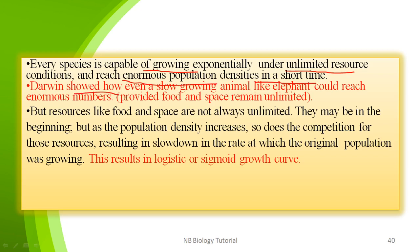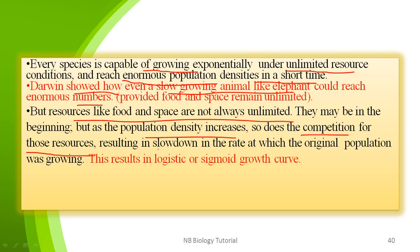Darwin showed how even slow-growing animals like the elephant could reach enormous numbers, provided food and space remain unlimited. But resources like food and space are not always unlimited. They may be sufficient in the beginning, but as population density increases, competition for obtaining these resources results in a slowdown in the rate at which the population was growing. This results in a logistic, or sigmoid curve, growth pattern.